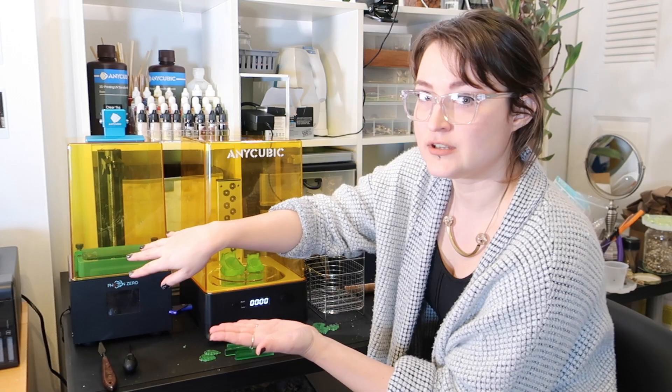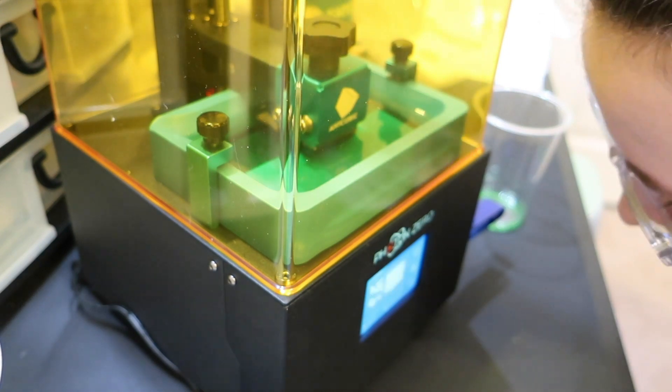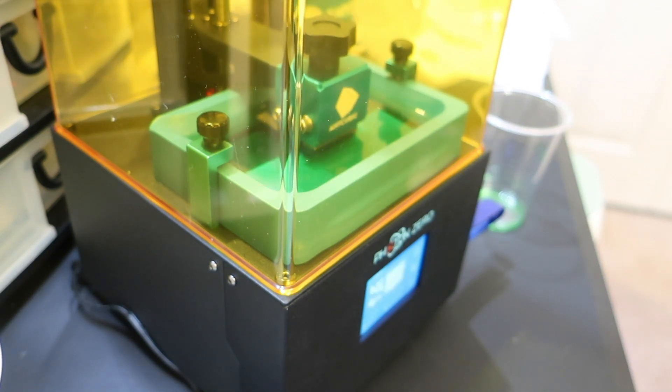The LCD screen projects images, blocking off the UV light where you don't want the resin to be exposed on the build plate.